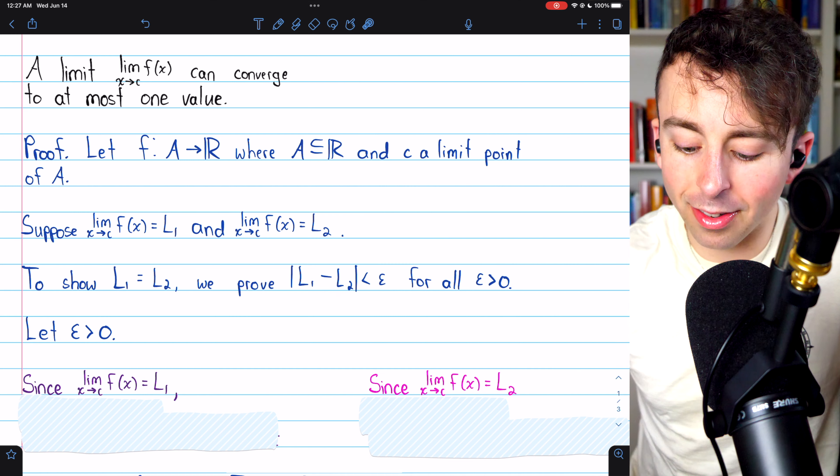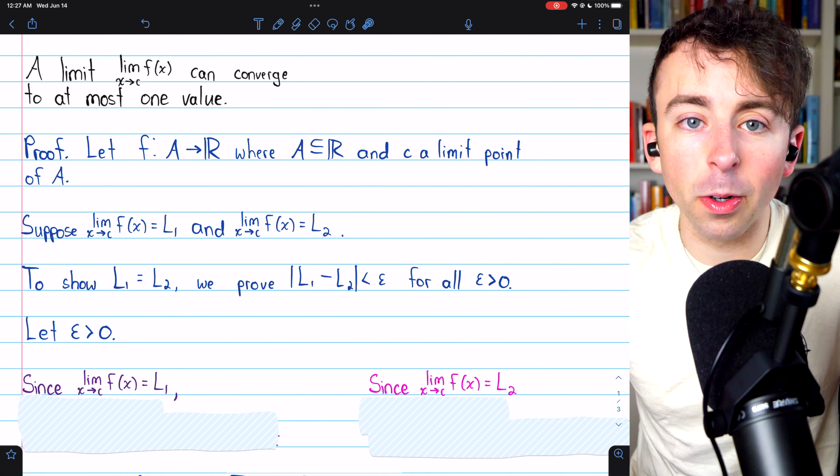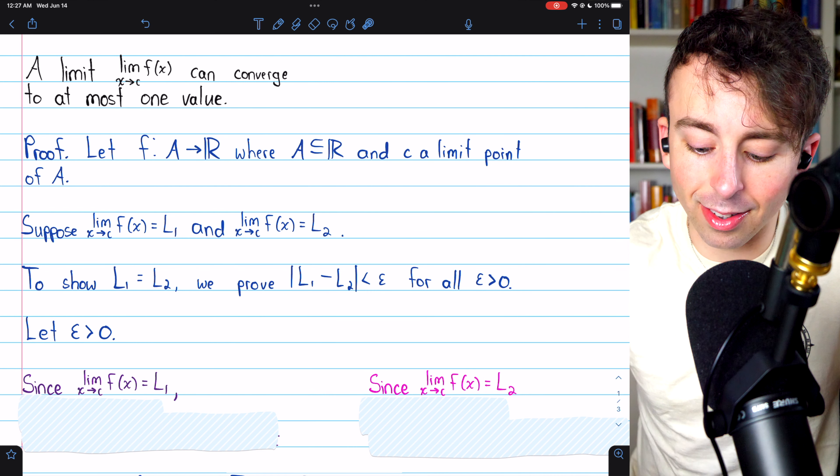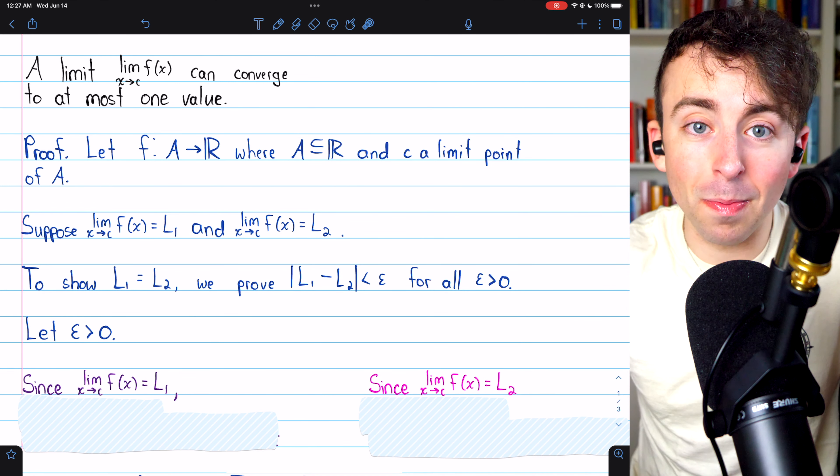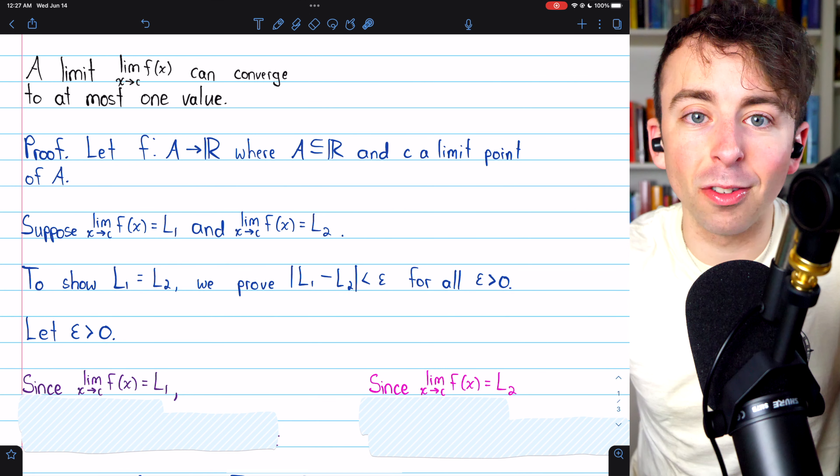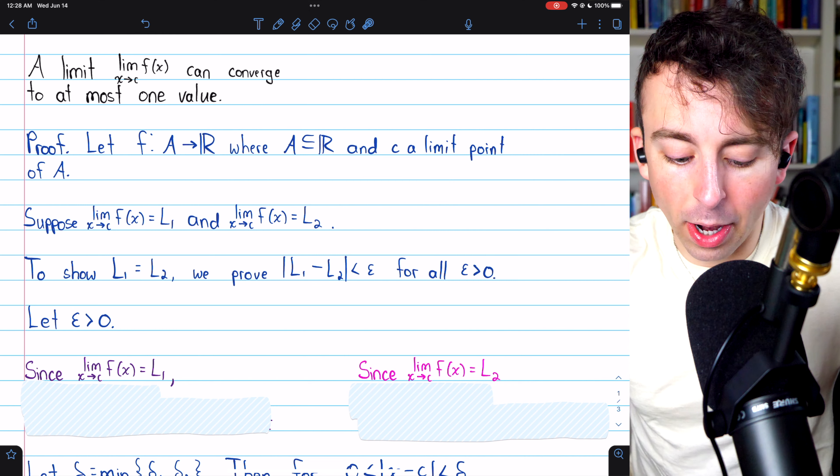the absolute value of L1 minus L2, is less than epsilon for all epsilon greater than zero. If the distance between these limits is less than every positive number, well, the only possibility is that there is no distance between them. They are equal. To that end, we'll let epsilon be greater than zero.